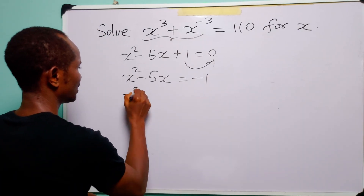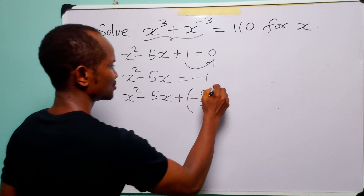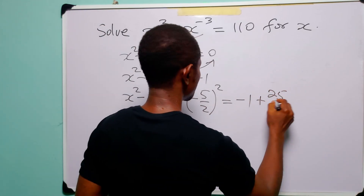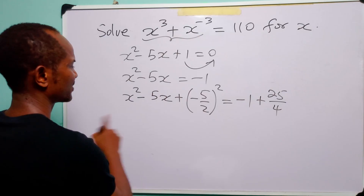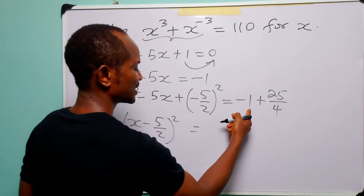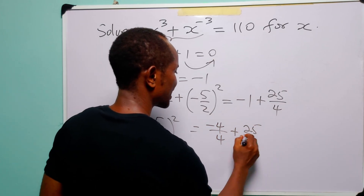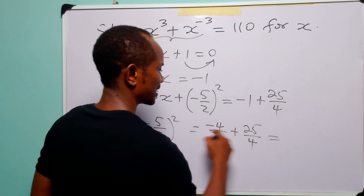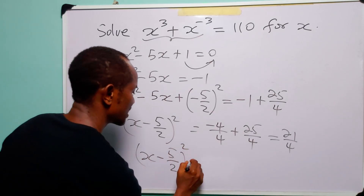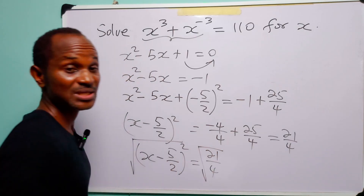Adding (−5/2)² = 25/4 to both sides: x² − 5x + (5/2)² = −1 + 25/4. The left side is a perfect square: (x − 5/2)² = −4/4 + 25/4 = 21/4. Taking the square root of both sides gives the next step.